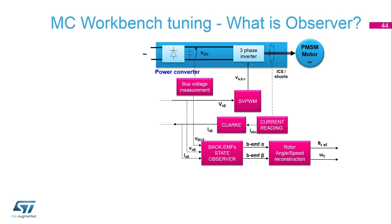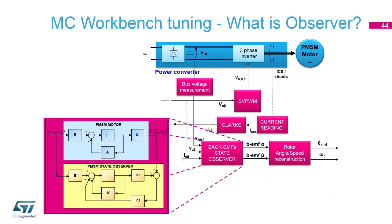The next part for tuning is the UZ observer — the Luenberger observer. It works by taking as inputs the bus voltage, the applied voltage vector in PWM, and the read-back currents. From these, a loopback system with correction parameters C2 and C1 reconstructs the back EMF signal. Through that reconstructed signal, speed and angle can be reconstructed.